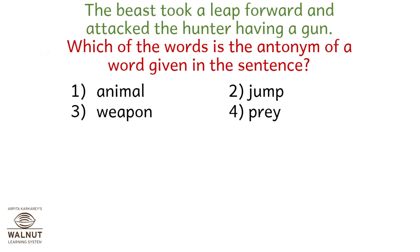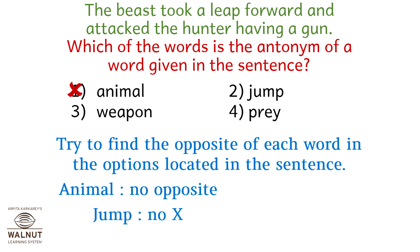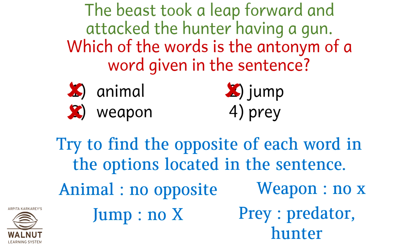The beast took a leap forward and attacked the hunter having a gun. Which of the words is the antonym of a word given in the sentence? Animal has no opposite — cut that out. Jump has no opposite — cut that out. Weapon has no opposite — cut that out. Prey has an opposite: predator or hunter. So the correct answer is option number 4.